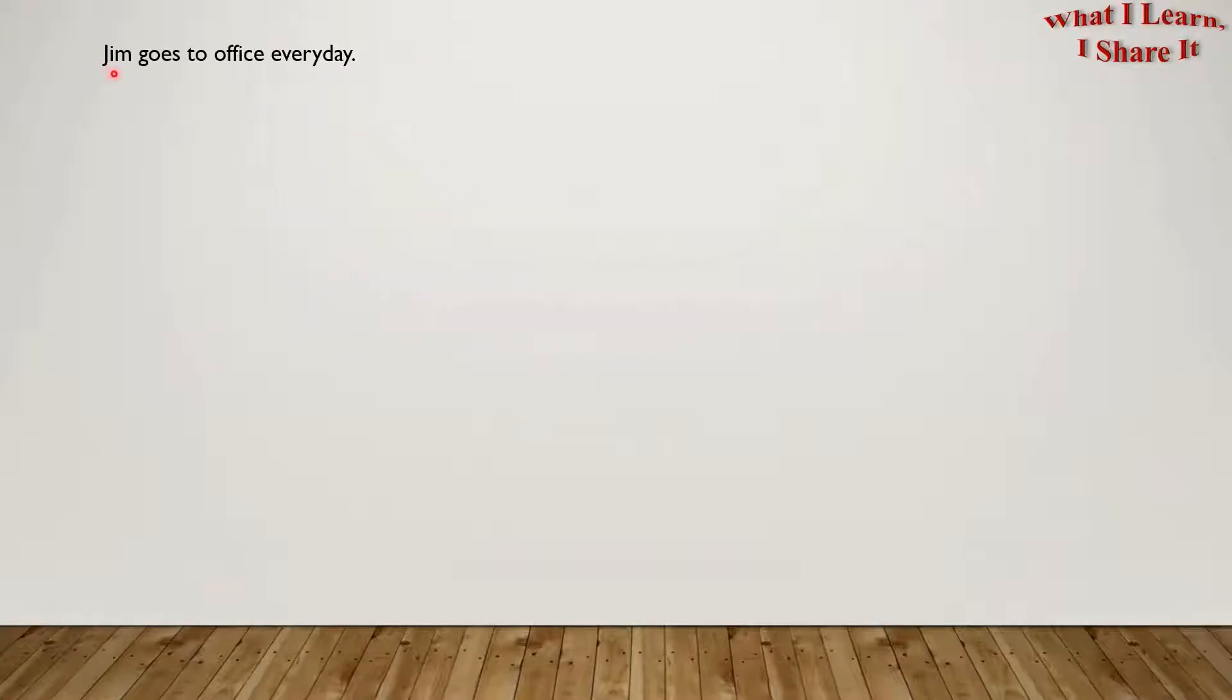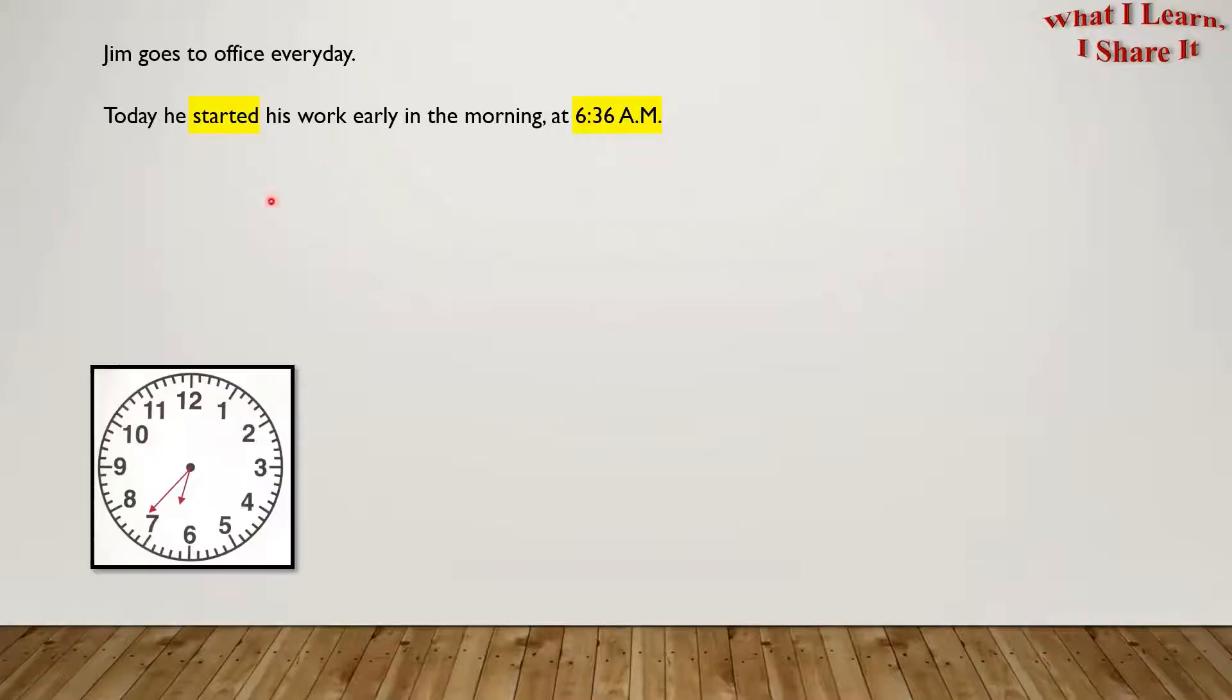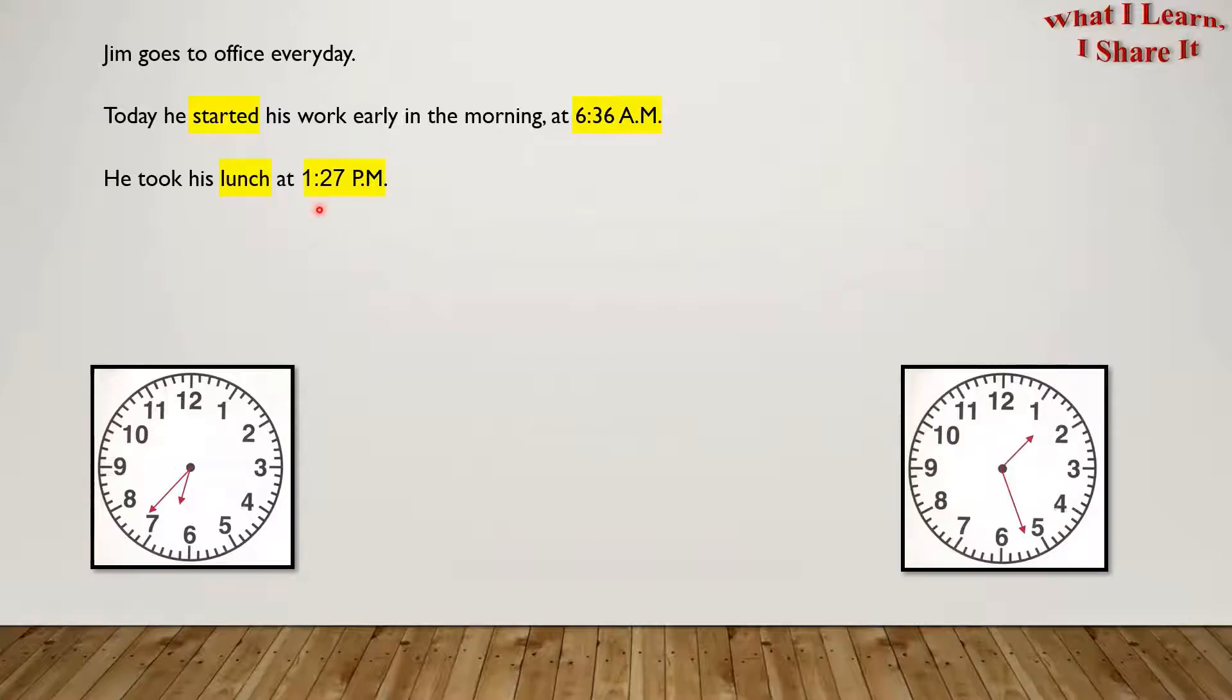Jim goes to office every day. Today he started his work early in the morning at 6:36 a.m. So here is the clock that shows 6:36 a.m. He took his lunch at 1:27 p.m. So here is the clock that shows 1:27 p.m. How long has Jim worked until lunch today?